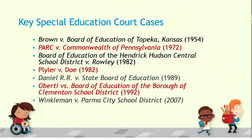Also in 1982, Plyler v. Doe came out of the state of Texas. The state of Texas had passed a law that required a fee to be paid for the education of immigrant children. The United States Supreme Court struck that down and said it was unconstitutional to make some kids pay for school while other kids did not. So now we have a very solidified free, appropriate public education.